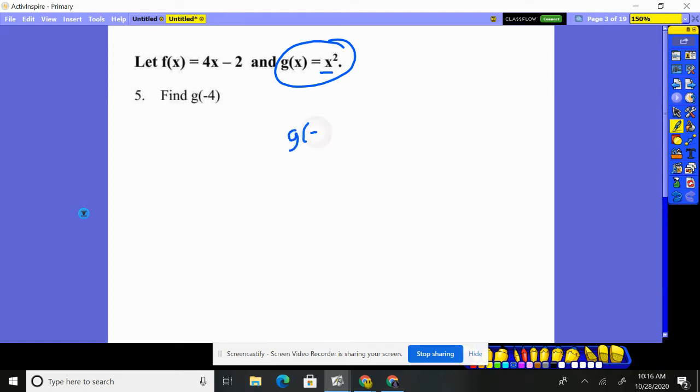So if I do g of negative four, it says whatever they give you, which is negative four, and square it. Now, is that negative four squared? I want to make sure we don't make that mistake, because that doesn't say negative four squared. That says the opposite of four squared.